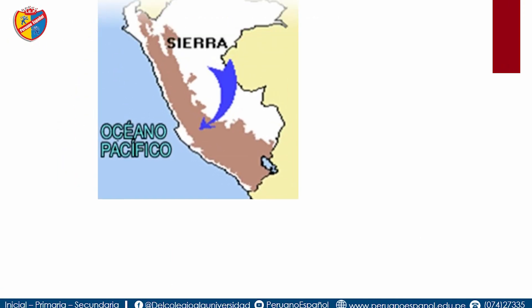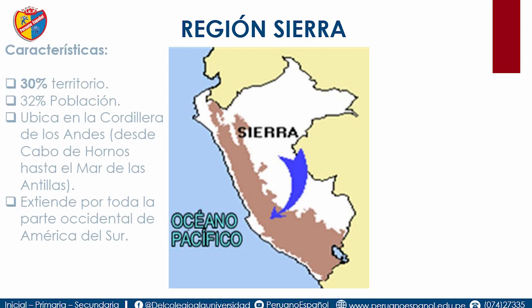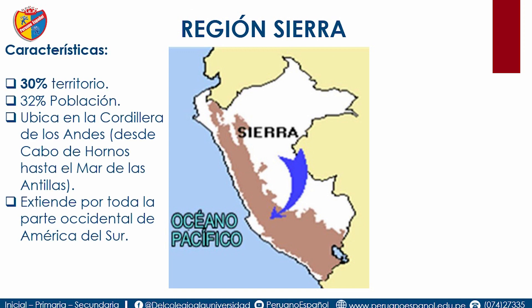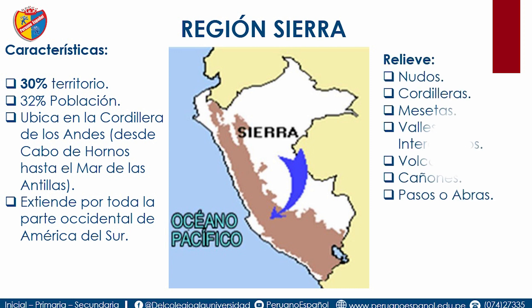La región sierra presenta el 30% del territorio y el 32% de la población, lo que significa que la gente de la sierra migra mayormente a la costa. Tenemos la presencia de toda la cordillera de los Andes; el Perú es un país andino central porque justamente por el Perú pasa la cordillera de los Andes. En relieve presenta nudos: el nudo de Pasco y el nudo de Vilcanota. Entre Áncash y La Libertad tenemos el nudo de Mollepato Pelagatos y el nudo de Tuco, donde se encuentran la Cordillera Blanca y Cordillera Negra.